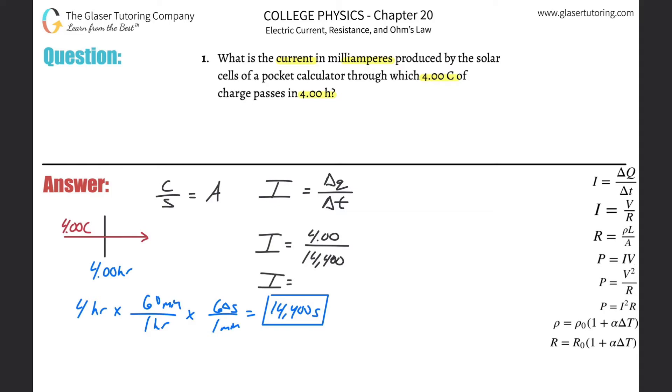The current here will be 2.78 times 10 to the minus fourth. Now that is in amps or ampere, but do they want it in amps or ampere? No, they want it in milli. Oh boy.